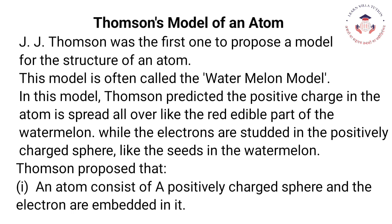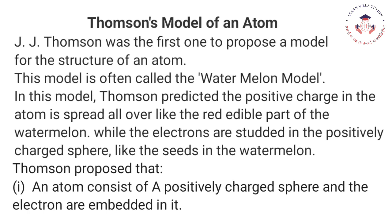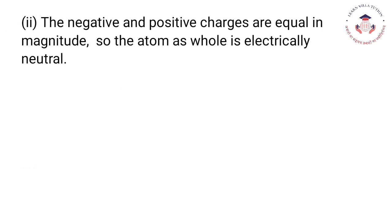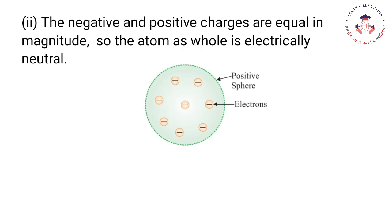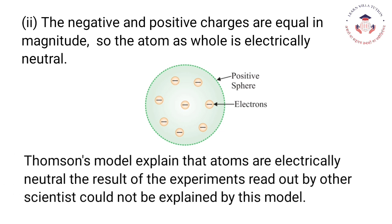Thomson proposed that an atom consists of a positively charged sphere and the electrons are embedded in it. The negative and positive charges are equal in magnitude, so the atom as a whole is electrically neutral. Thomson's model explained that atoms are electrically neutral, but the results of experiments carried out by other scientists could not be explained by this model.